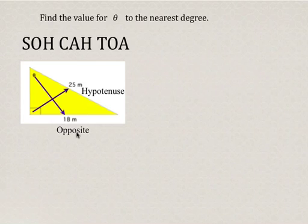And so if we've got given the opposite and the hypotenuse, we look to SOH CAH TOA to determine which trig ratio we're going to use. And since sine is opposite over hypotenuse, we're going to use sine.